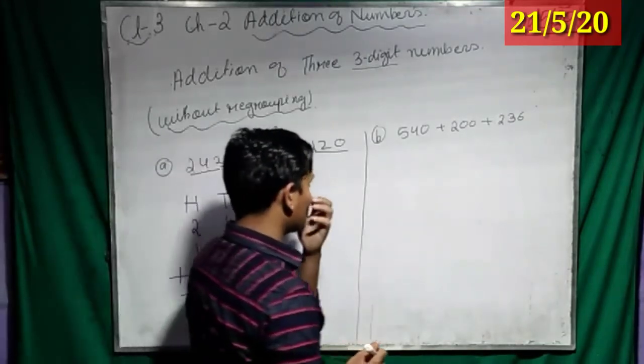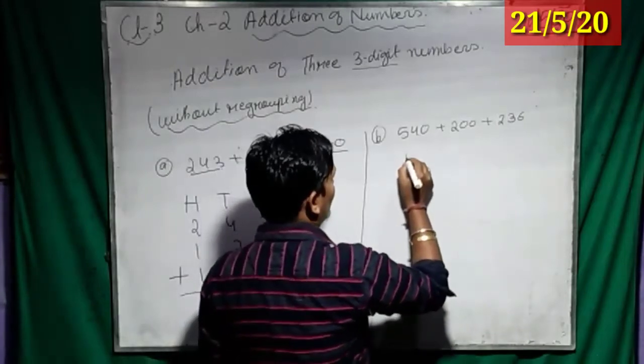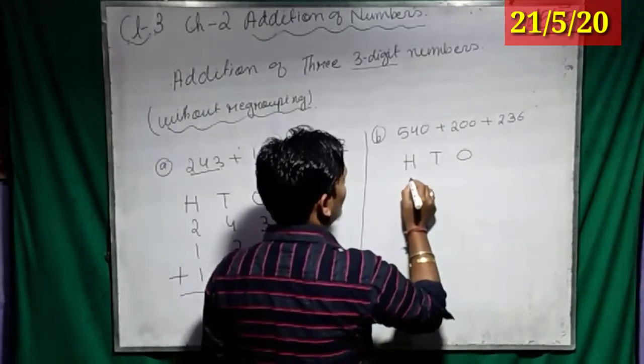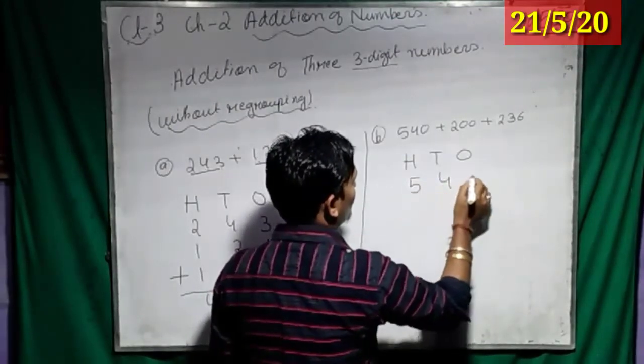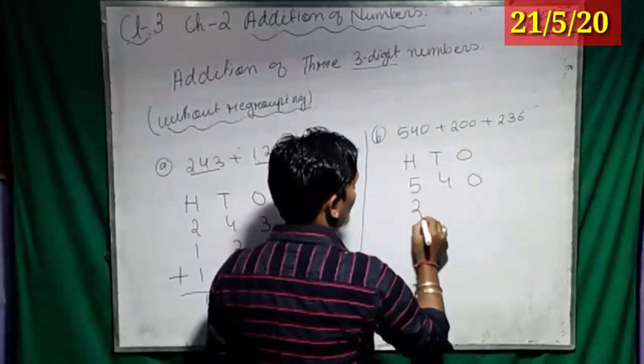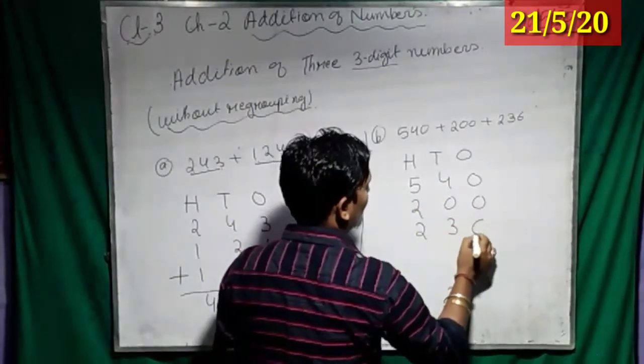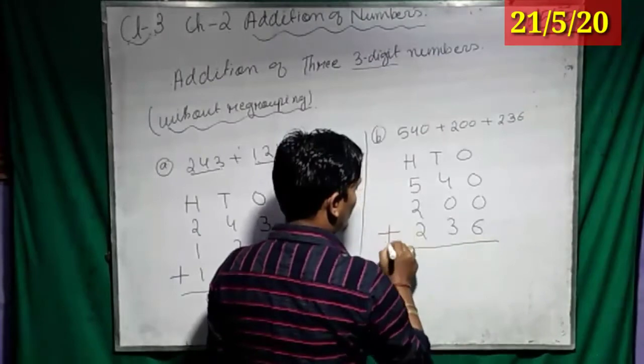Okay. Now, number B. So, first what we have to write? H-T-O. Now, what we have to do? Yes, 540, then 200, then 236. Now, plus.